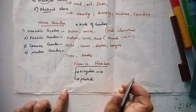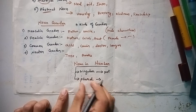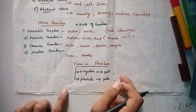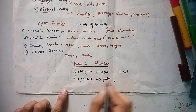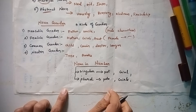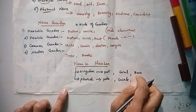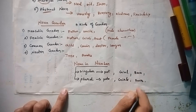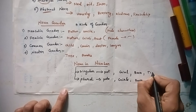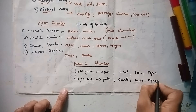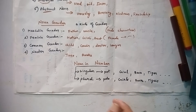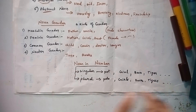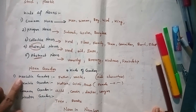Singular refers to one — for example, pot. If there are many, it becomes plural: pots. Woman is singular; women is plural. Girl is singular; girls is plural. Book is singular; books is plural. Tiger is singular; tigers is plural. Problem is singular; problems is plural. These are examples of singular and plural nouns.